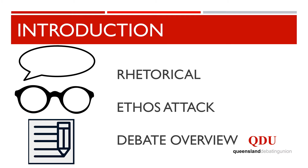As you become more experienced in debating, you will likely hear about the second type of introduction: an ethos attack. An ethos attack is one where you take a core argument made by the opposition that is either factually or logically incorrect and you point out the problem in that argument in order to undermine the credibility of their speech. Just remember that an ethos attack does not mean you can comment on how confident another speaker is, their choice of words, or body language. Instead, you should only refer to the arguments they have made, and not their personal characteristics.